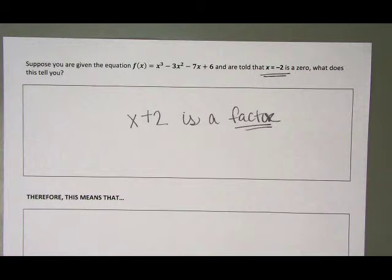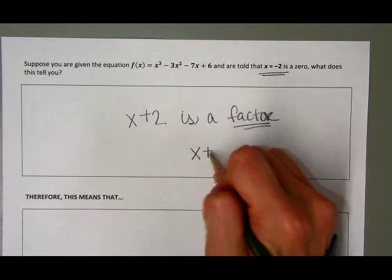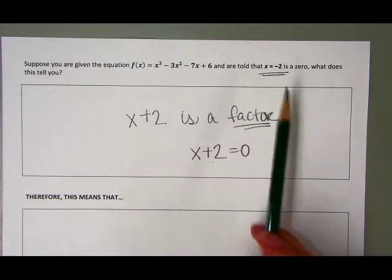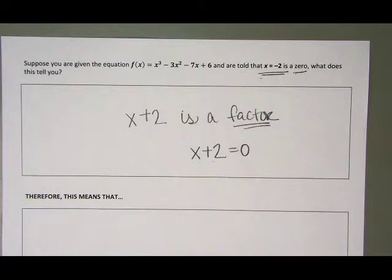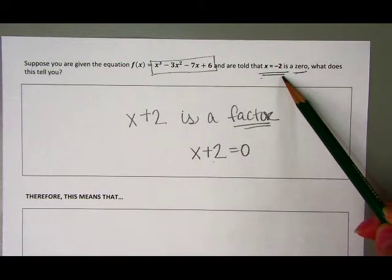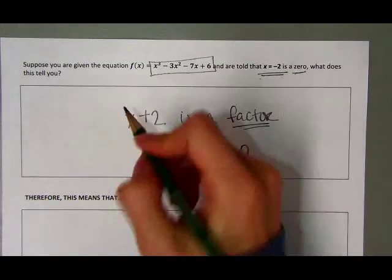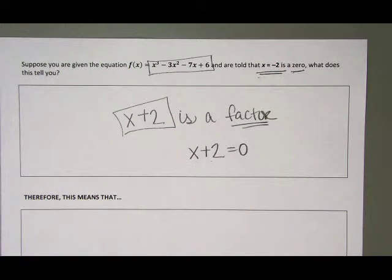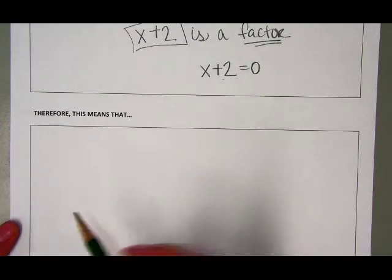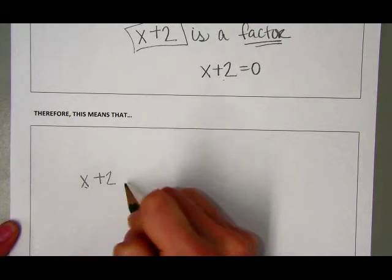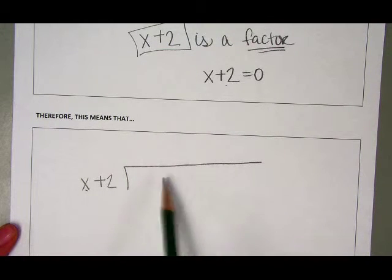x plus 2 is a factor, since x plus 2 equals 0 had to happen first before you got x equals negative 2 as a zero. So if I know we have a cubic function and I know one zero, I can use my factor — x plus 2 — to divide into my cubic function to find the other zeros, so I can sketch a better graph of what this cubic function might look like.